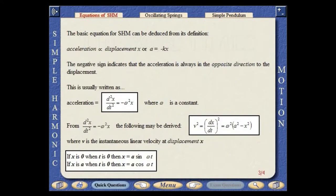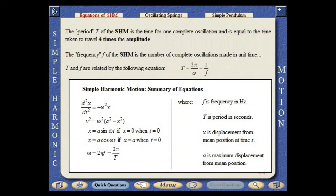The basic equation for simple harmonic motion can be deduced from its definition. The period of the motion is the time taken for one complete oscillation and is equal to the time taken to travel four times the amplitude. The frequency of the simple harmonic motion is the number of complete oscillations made in unit time.